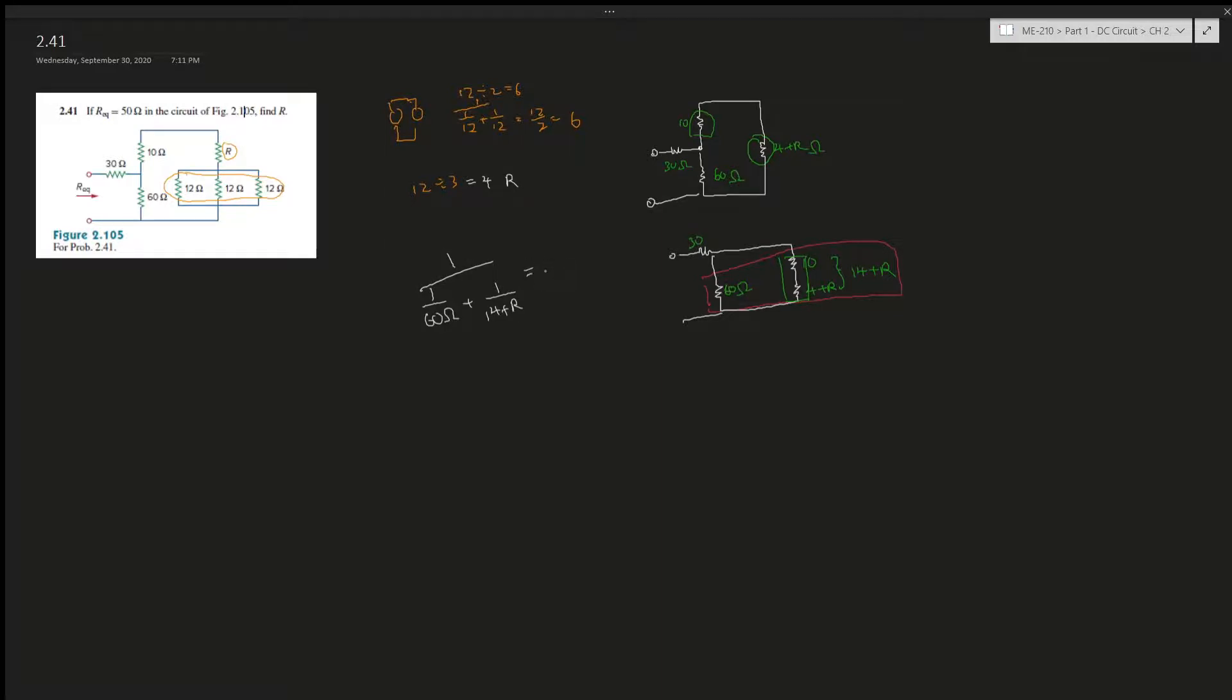Which is 1 over 60 ohms plus 1 over 14 plus R, 1 over that. And that's gonna give you some kind of number, which is the simplified version of this resistor. Let's call it R_combined. So let's draw it over here. Now there's a 30 and then this is the R_combined.